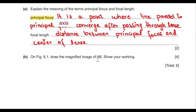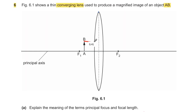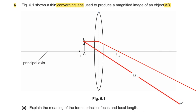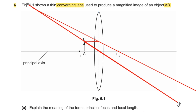Part B says: on figure 6.1, draw the magnified image of AB and show your working. A light ray parallel to the principal axis will pass through the focal point, and a ray through the center of the lens goes undeviated. Extending these two lines, they meet at a point forming the image. The image is upright — B comes upward and A at the bottom.